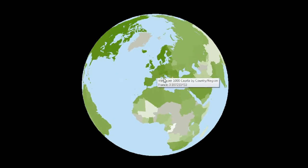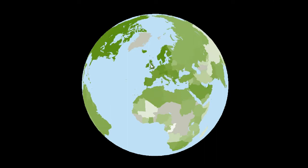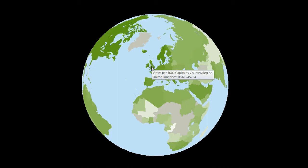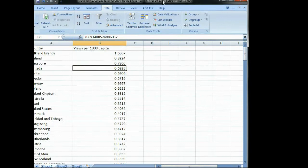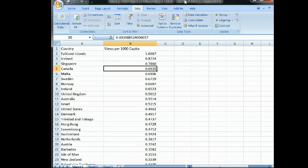There's a lot of deep green in Europe. In Great Britain, United Kingdom, it's 0.56 views per 1,000. In Ireland, 0.65 views per 1,000 — so per capita, Ireland has more views than Great Britain. Here are the top 20 countries in spreadsheet form, sorted by views per capita.